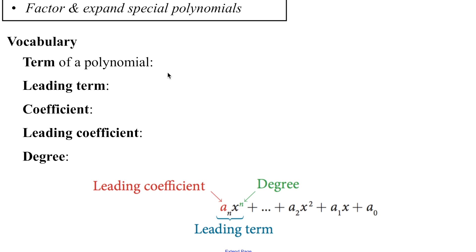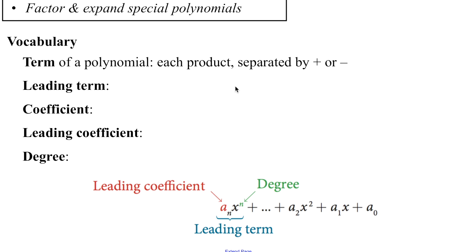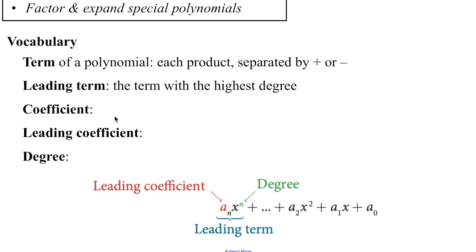The very first thing we need to talk about is what is a term of a polynomial. A term of a polynomial is just something where you have a product of numbers and variables, and each of these terms is separated by addition or subtraction. The leading term then is the term that has the highest degree. And you might ask, what is the degree of a polynomial?